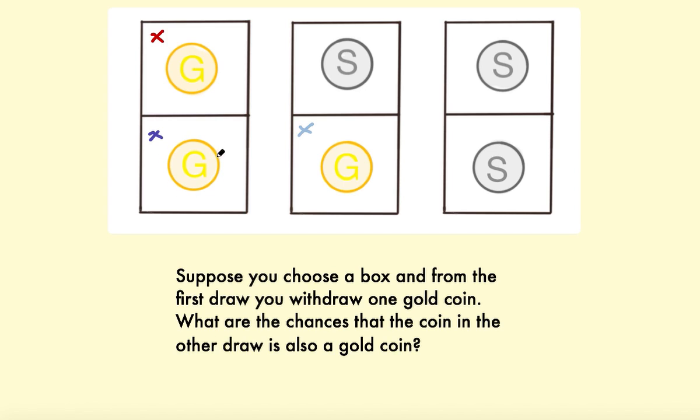If you picked this gold coin first, you'd get a gold coin second. And if you'd pick this gold coin first, you'd get a silver coin. So the probability is actually two thirds.